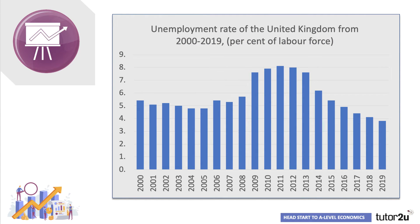As this chart shows, the unemployment rate in the UK has been falling steadily since it peaked towards the end of the last recession in 2011. Indeed, by 2019, the jobless rate, measured as a percentage of the labour force, had dropped below 4%, raising hopes that the British economy might, for the first time in many years, come close to reaching a situation of full employment.